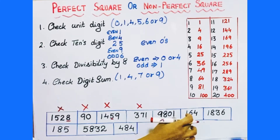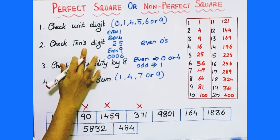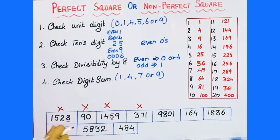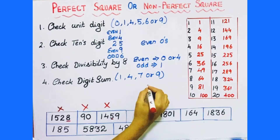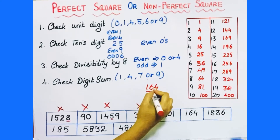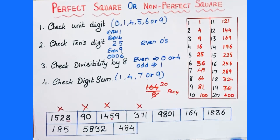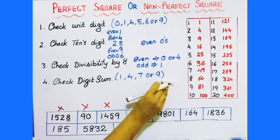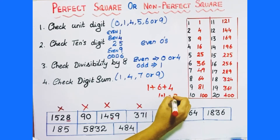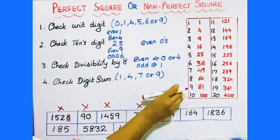Next number is 164. First test: unit digit is 4 — passed. Next test: tens digit should be an even number — yes, even number, passed. Next: divisibility by 8. Take 164 and divide by 8 — it is even, so remainder should be 0 or 4. 164 divided by 8 is 20 remainder 4 — passed. Next test: digit sum. 1 plus 6 plus 4 equals 11, then 1 plus 1 equals 2. Digit sum is 2, which fails. As the digit sum failed, 164 is not a perfect square number.